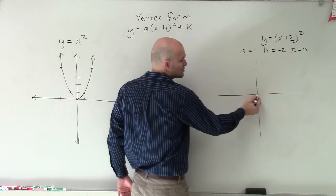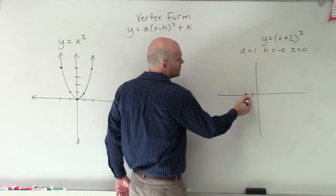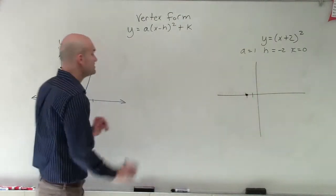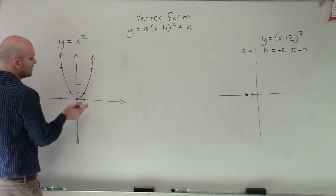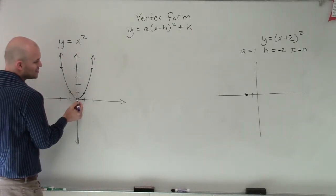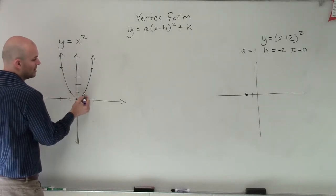So our vertex was originally at 0, 0. I'm now going to move that over two units. Now, since my a has remained the same, right, the coefficient of my x squared term is still going to be 1, my graph is still going to have the relationship for its next two points as over 1, up 1, over 2, up 4.